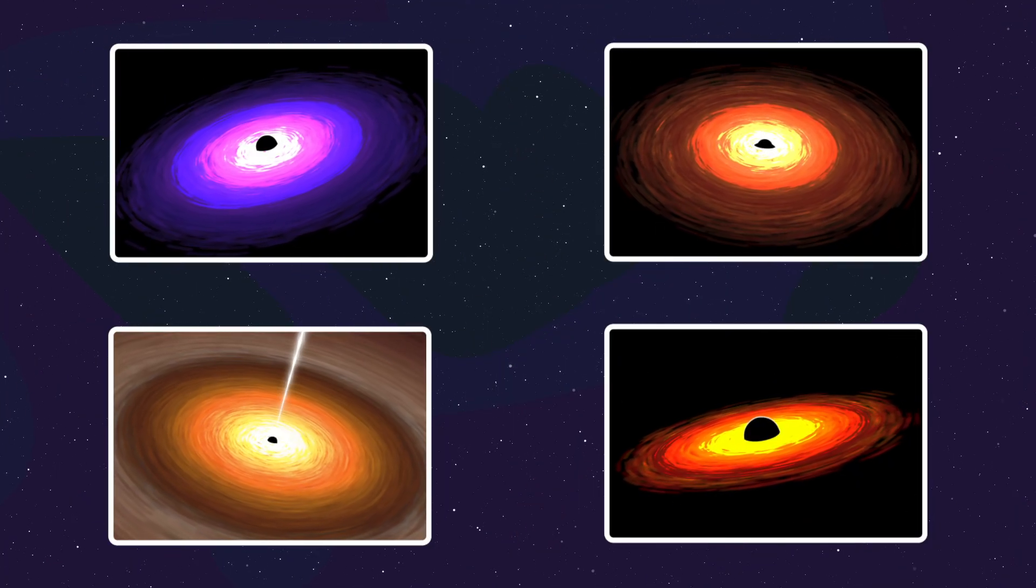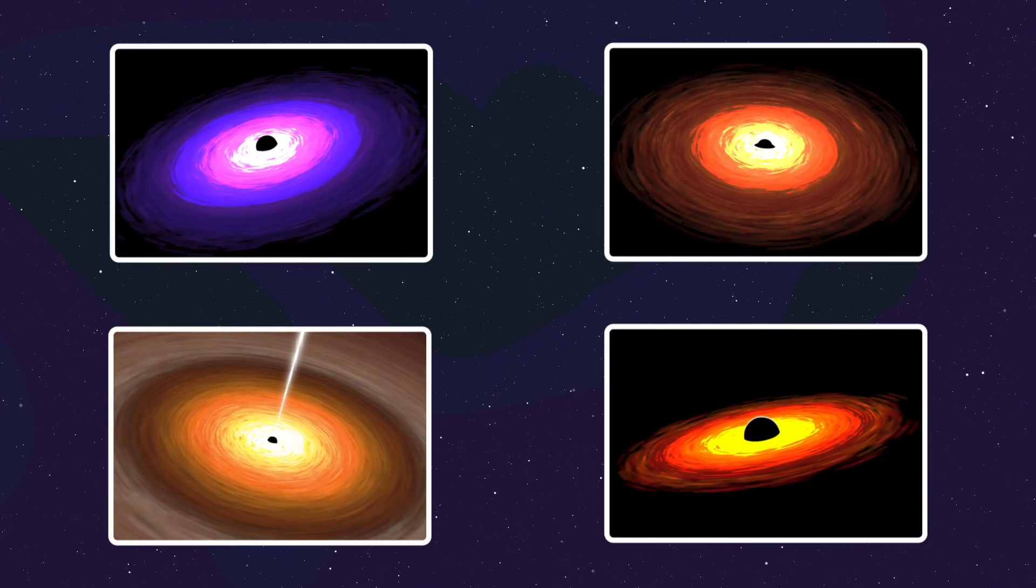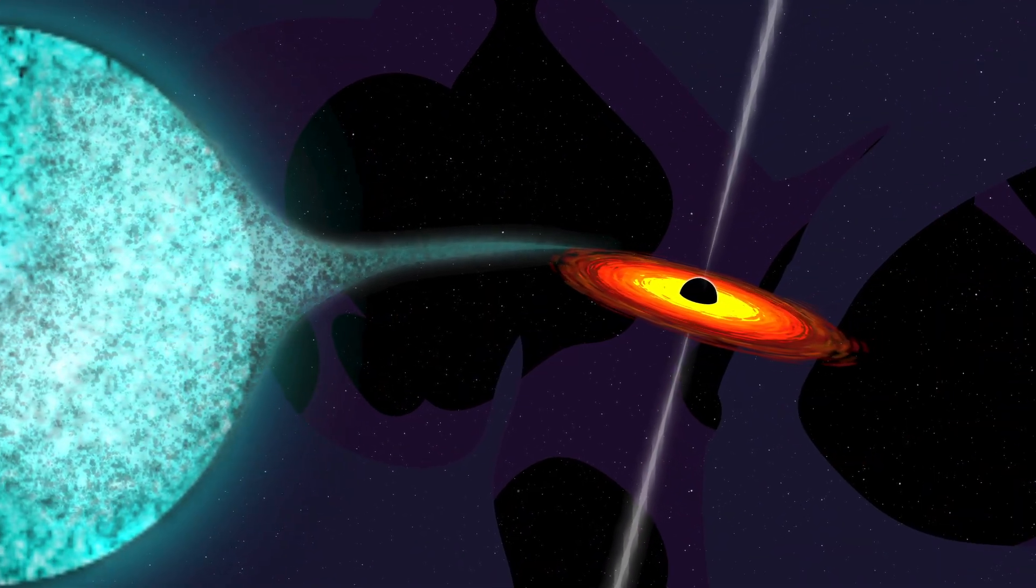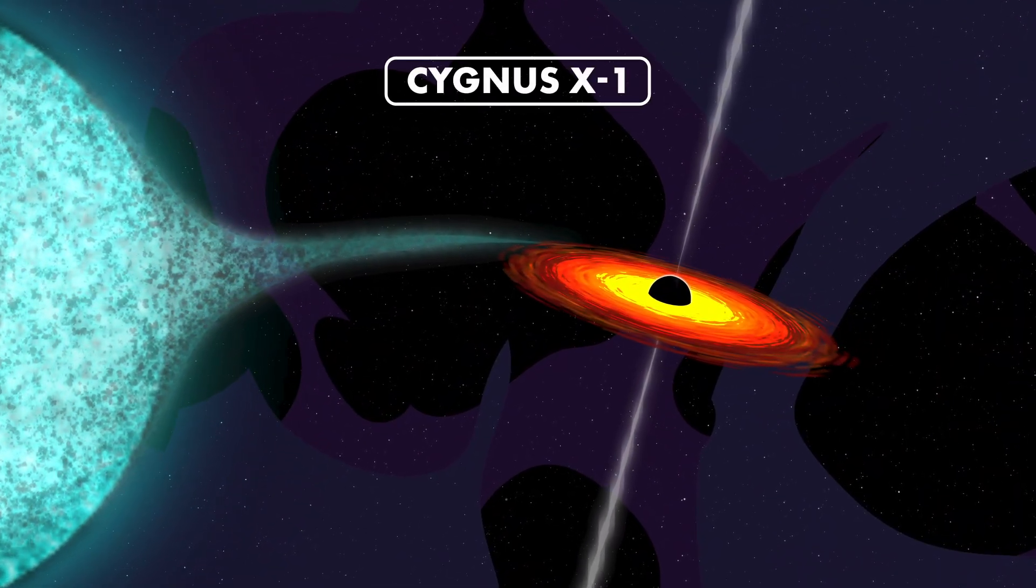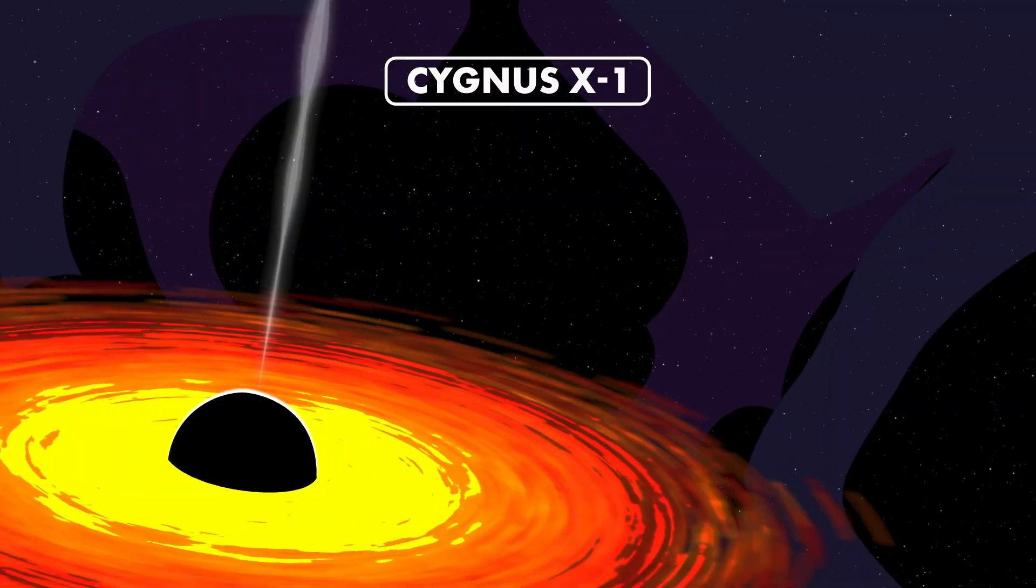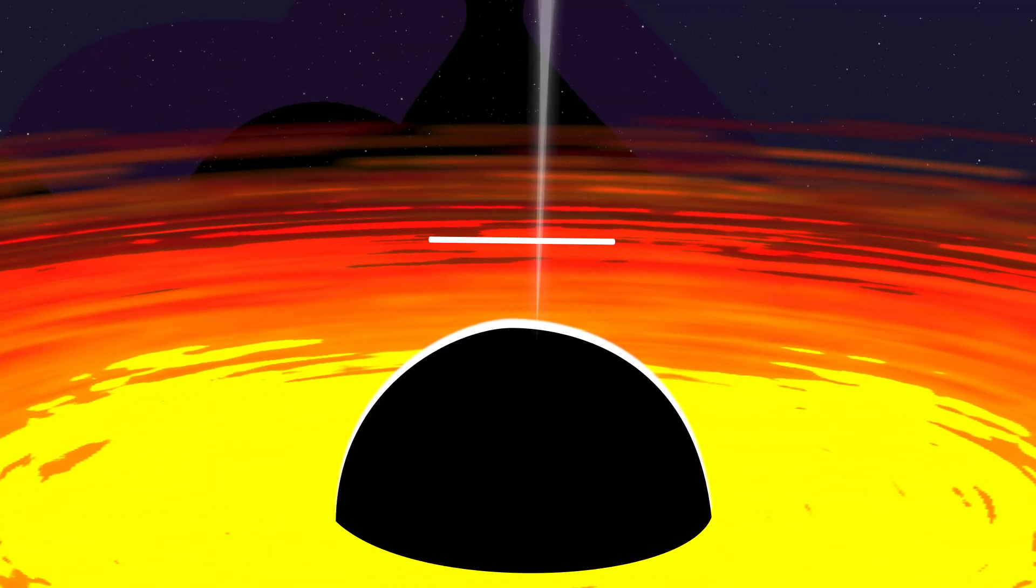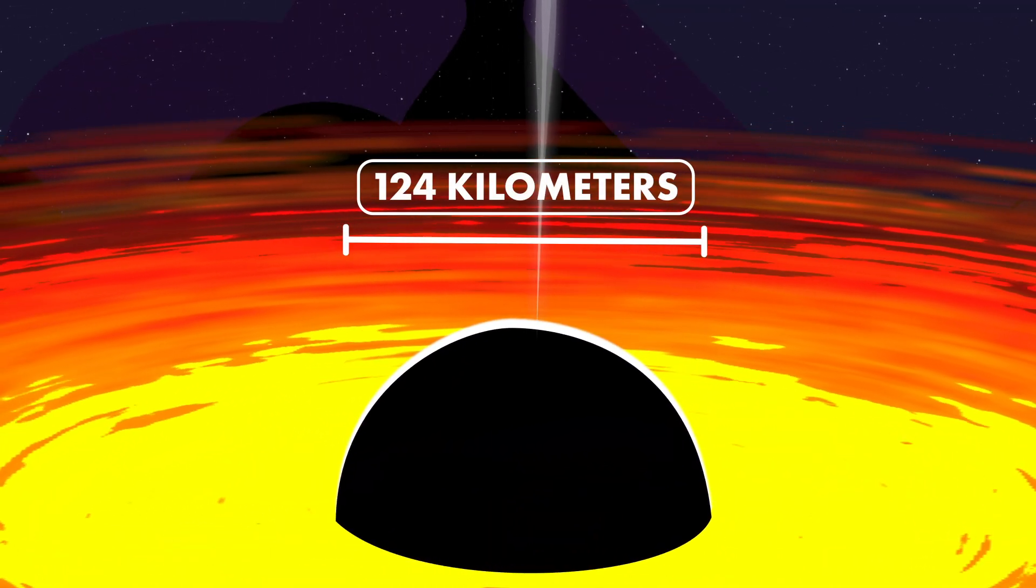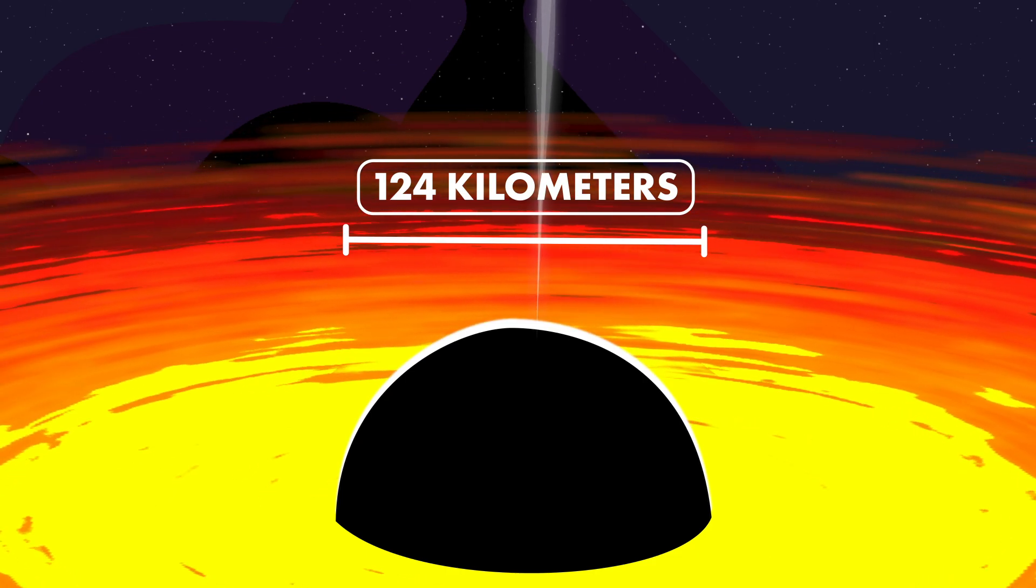Black holes are already much smaller in diameter than the stars that create them. The first widely accepted black hole, Cygnus X1, is 21 times more massive than the sun, yet its event horizon is only about 124 kilometers in diameter, which is less than 1% of the diameter of Earth.